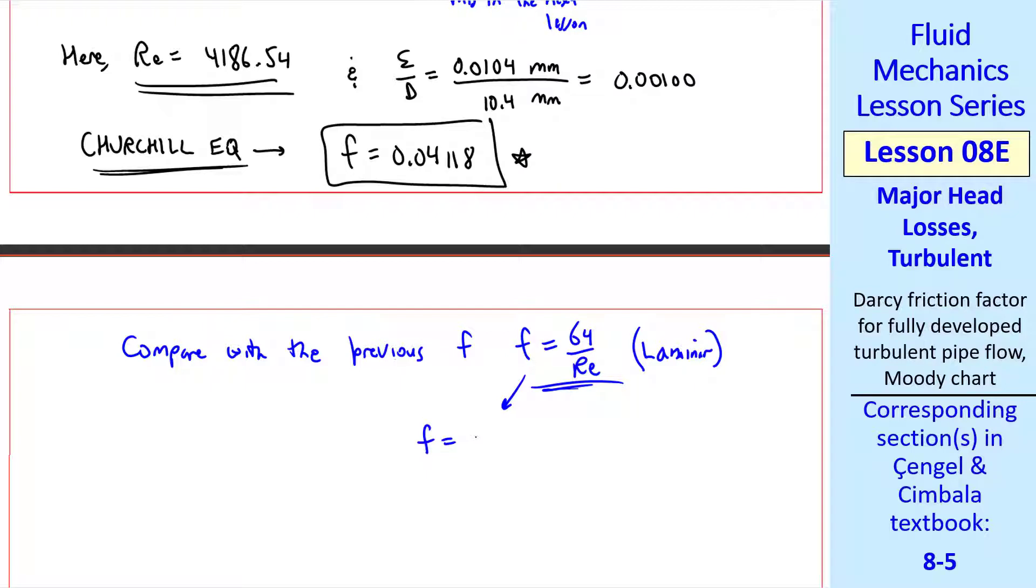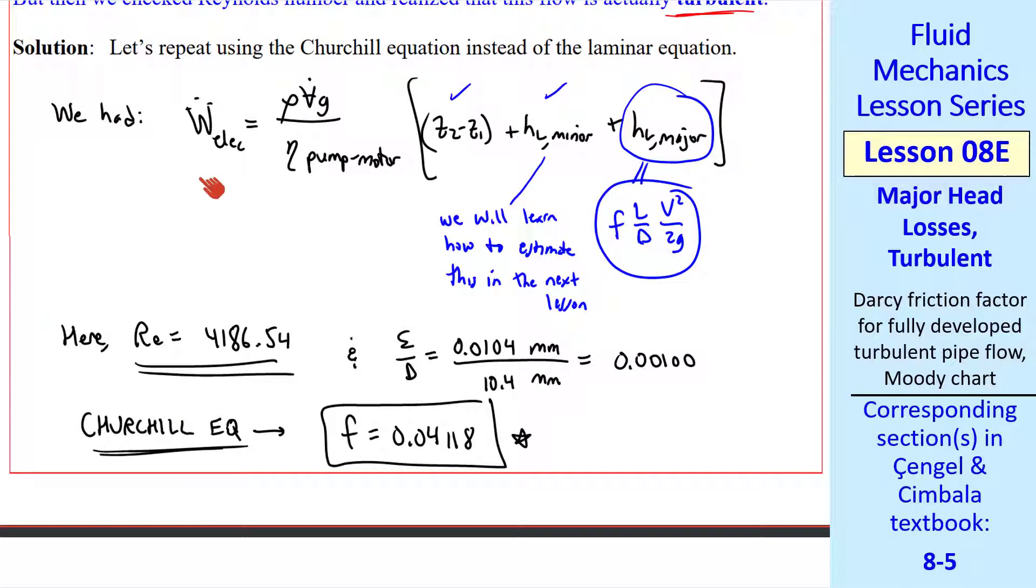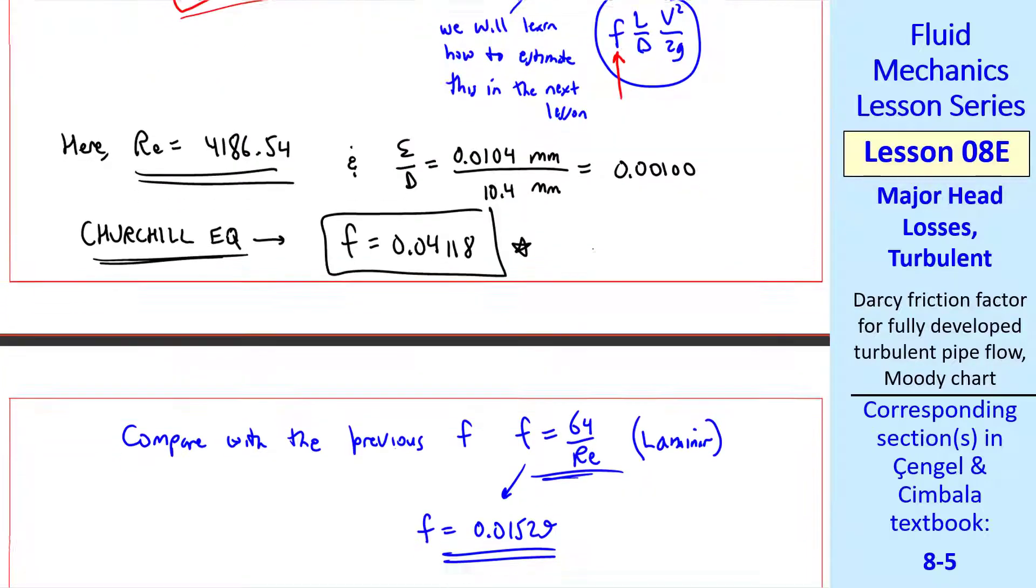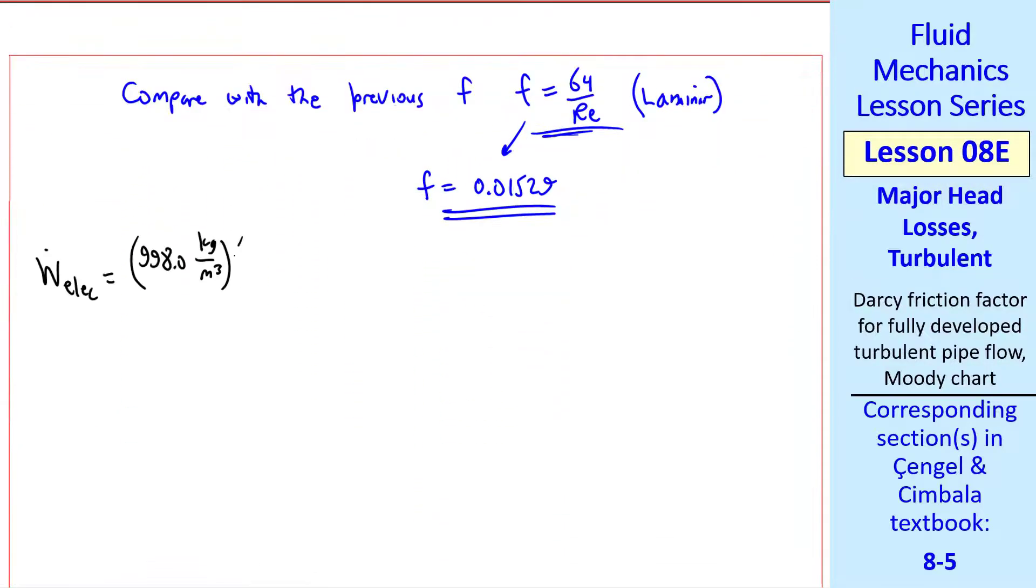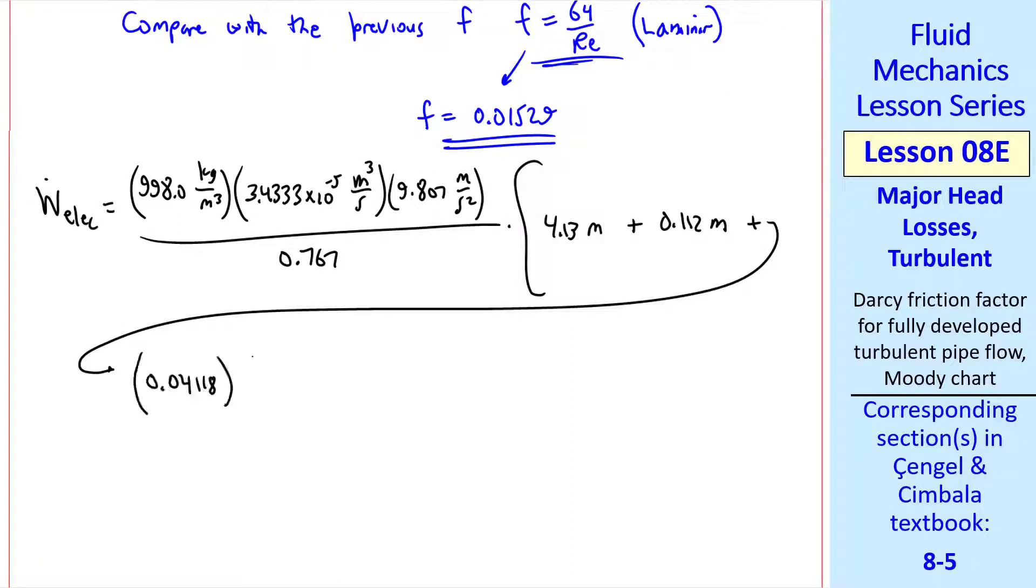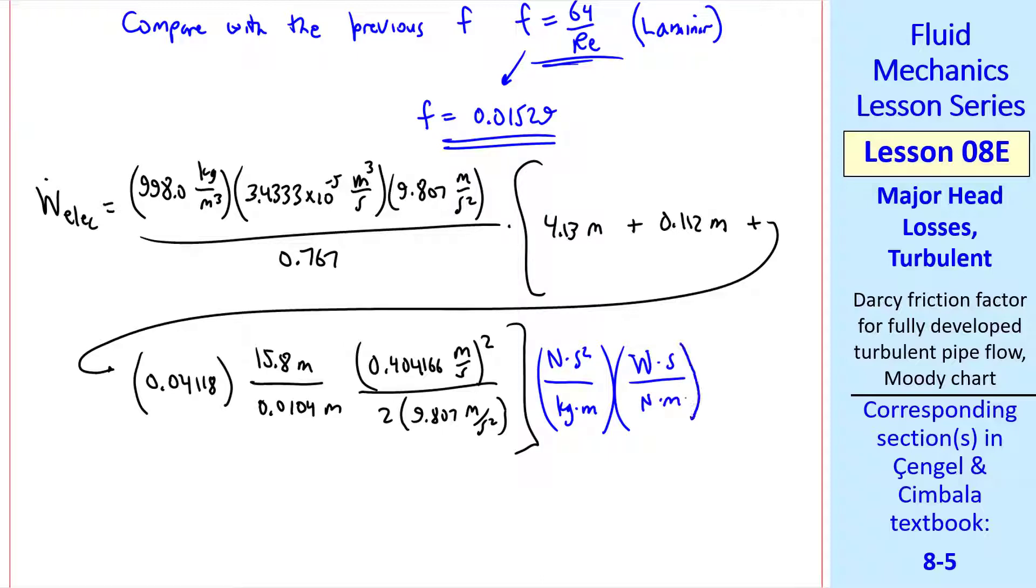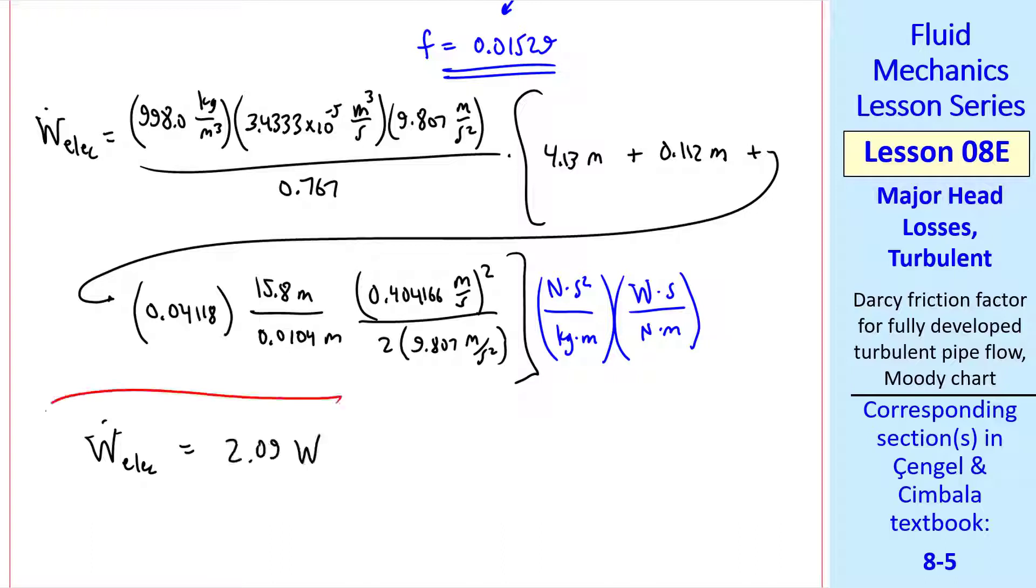We had from the previous lesson the electrical power required is rho V dot G divided by the pump motor efficiency times the quantity elevation difference plus minor head losses plus major head losses. These major head losses are given by F L over D V squared over 2 G. We were given this elevation difference and the minor losses. As I said in the previous lesson we will learn how to estimate this later in fact in the next lesson. We had calculated the Reynolds number last time. I give more digits here it's 4186.54 and the roughness parameter is epsilon over D which is 0.00100. Plug these into your software for the Churchill equation and you should get F equal 0.04118. Again try this on your own for practice. Make sure you can get that number.